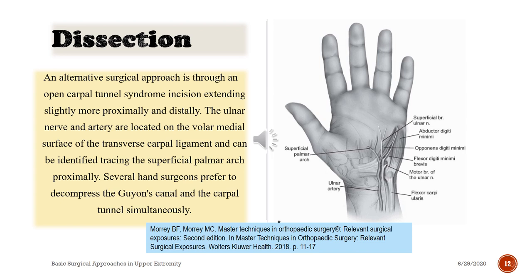An alternative surgical approach is through an open carpal tunnel syndrome incision extending slightly more proximally and distally. The ulnar nerve and artery are located on the volar medial surface of the transverse carpal ligament and can be identified by tracing the superficial palmar arch proximally. Several hand surgeons prefer to decompress Guyon's Canal and the carpal tunnel simultaneously.